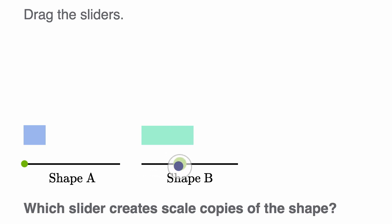But as we move this slider, it seems like it's only scaling the width. It's not scaling the height. So this slider, shape B right over here, the slider for shape B is not creating scale copies of itself. It's only increasing the width, not the height.